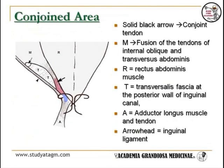The conjoined tendon is the fused aponeurosis of the internal oblique and transversus abdominis, and it is inserted on the pubic tubercle and the superior ramus of the pubis.